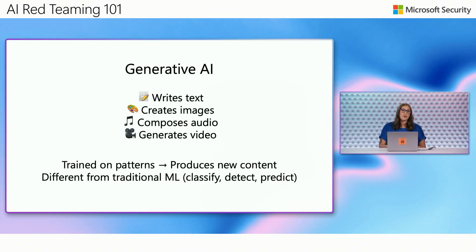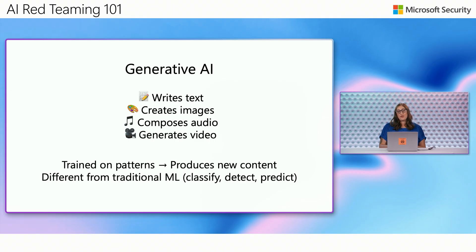Some models go even further. The multimodal models, like GPT-4-o or Gemini, can handle not just text, but also images, audio, and video, all within the same model. Not all language models are large — small language models, or SLMs, like the Phi series from Microsoft or Gemma from Google, are optimized to run on local devices and target more narrow tasks. They're much faster and cheaper to train, but they can be less robust when pushed beyond their training scope.